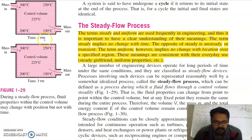With a change in time from 1 PM to 3 PM, the temperature at these positions remains the same. The opposite of steady is unsteady or transient. If with the change in time, if temperature will change—300 to, you can say here, it will change—so it is called unsteady. So these meanings are consistent with their everyday use. A large number of engineering devices operate for a long period of time under the same conditions, and they are classified as steady flow. Most of the engineering devices will work under steady-flow conditions.